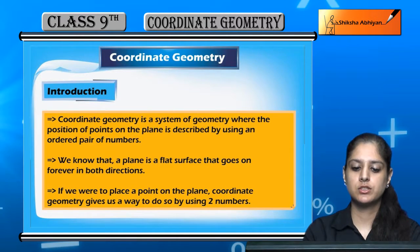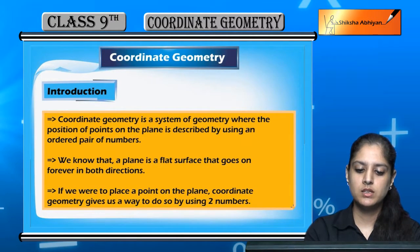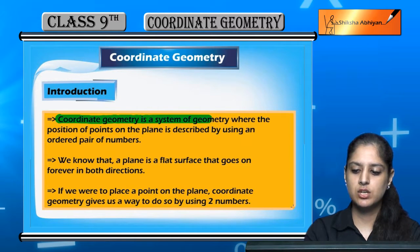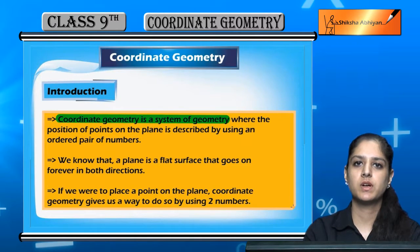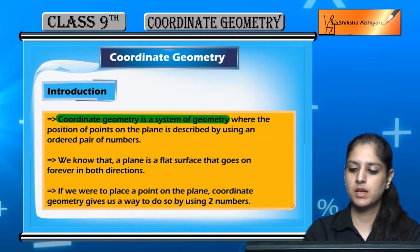Starting with the introduction, coordinate geometry is a system of geometry where the position of points on a plane is described using ordered pairs.